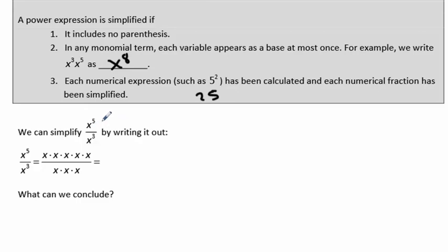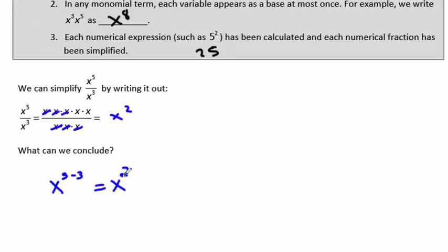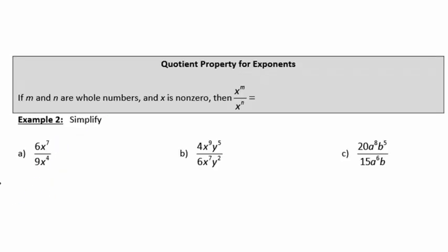In the example where you have x to the 5th divided by x to the 3rd, we can simplify this by writing it out and noticing that you can divide off 3 of the x's from both the top and the bottom, giving you x squared left over. From the exponents 5 and 3, if you subtract the 3 you're canceling, 5 minus 3 is 2. So we can conclude that this simplifies by subtracting the powers.